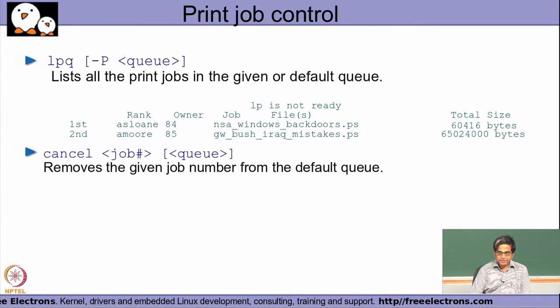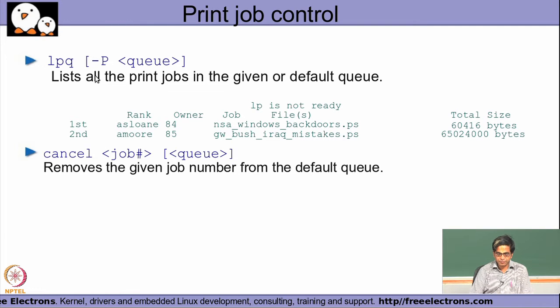Not all data formats can be converted into postscript and subsequently printed successfully. If I want to find out how many jobs are on my queue, I can use the lpq command, which lists all pending jobs, which user fired them, and also the total size in bytes of each job.